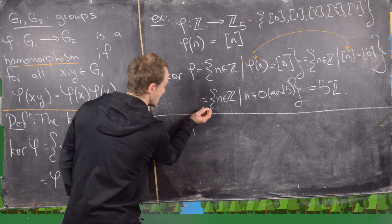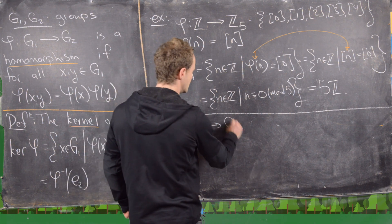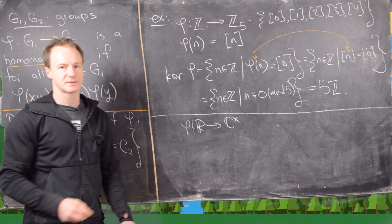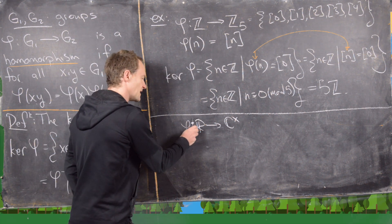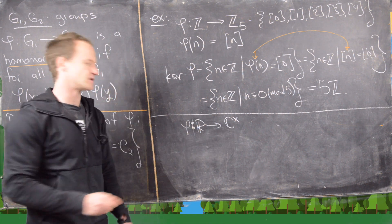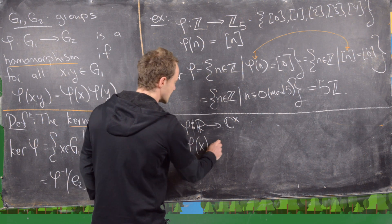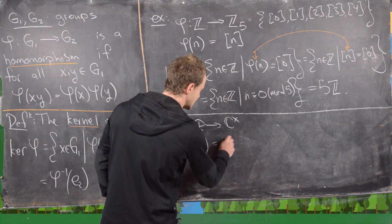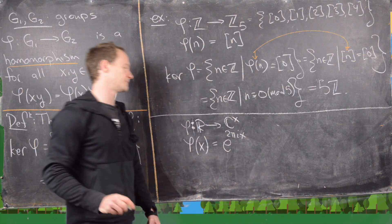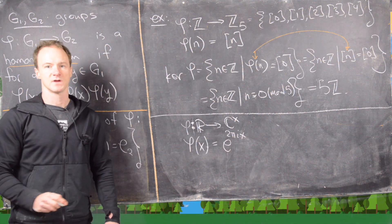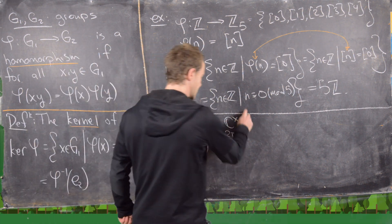For our next example, let's take phi from the real numbers under addition to the complex numbers under multiplication, defined by phi of x equals e to the 2 pi i times x. Let's figure out what the kernel is in that case.